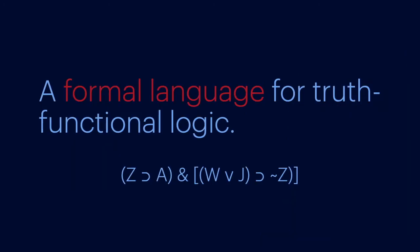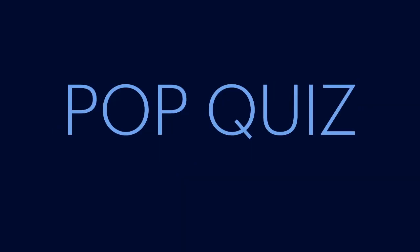Our formal logical language is pretty simple. It's made up of constants, operators, and grouping indicators. And we put them together according to three simple rules of grammar. Let's close with a few examples to test your understanding. Ready?